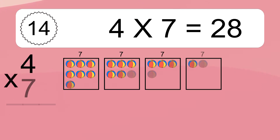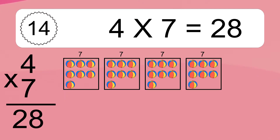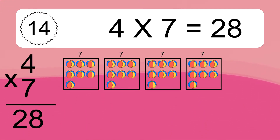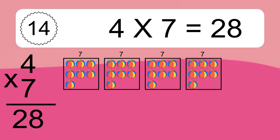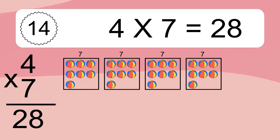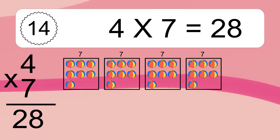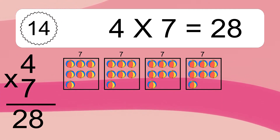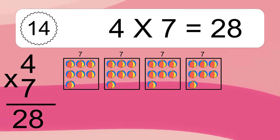4 times 7 equals what? 4 times 7 equals 28. We have 4 boxes, and each box has 7 colorful balls inside. If you count all the balls in all the boxes together, you will have 4 times 7 balls. This equals 28 balls.